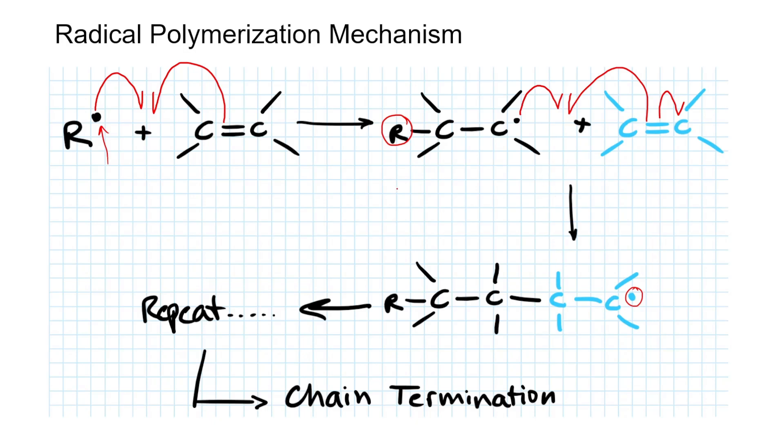The propagation step will repeat itself over and over, integrating more monomers until you reach the termination step. Your polymer will continue to increase in length until you reach chain termination, which is indicated here.